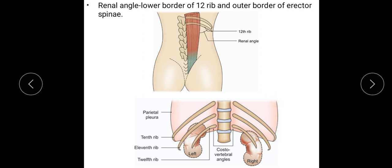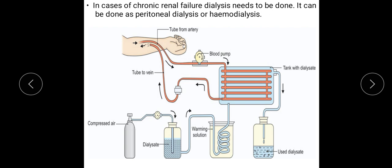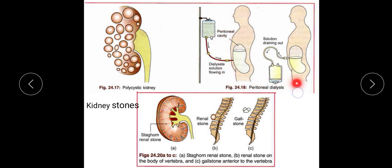The kidney may be transplanted in selected cases; the donor's left kidney is implanted into the recipient's right side. In chronic renal failure (CRF), dialysis needs to be done; it can be performed as peritoneal dialysis or hemodialysis. These are important treatment procedures in chronic renal failure.